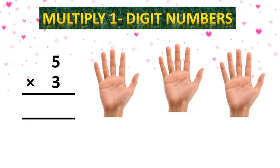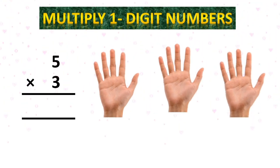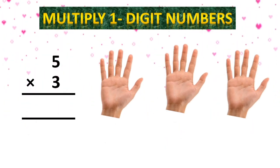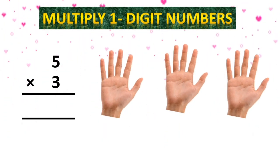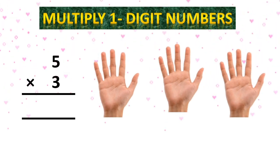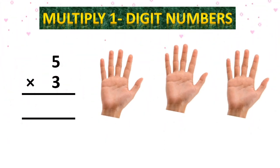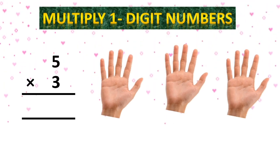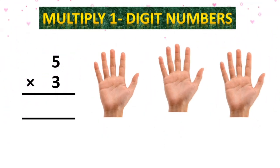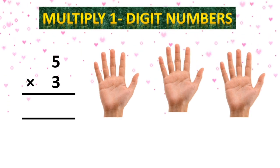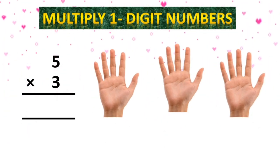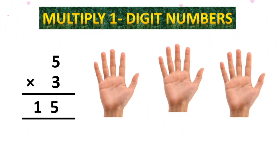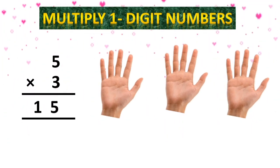Bita, look here — 5 multiply by 3. Aapne yeh baat yaad rakhni hai ki 5 — 1 hand ki 5 fingers hai, 2nd hand ki bhi 5 fingers hai, aur 3rd hand ki bhi 5 fingers hai. It means 5 plus 5 plus 5. So hum yahan par multiplication use karenge. 5 ones are 5, 5 twos are 10, 5 threes are 15. So it means total numbers of fingers are 15.